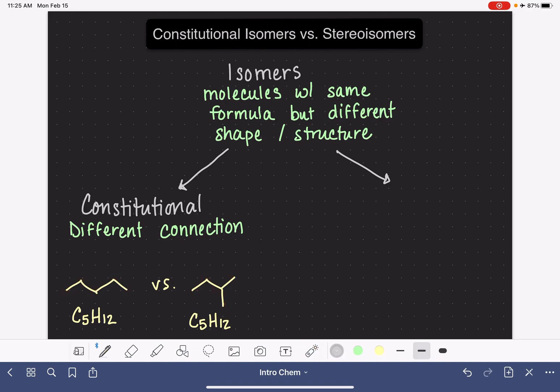A second type of isomer is known as a stereoisomer. Stereoisomers have the same connection, but they have something different about their shape. The atoms are going to be connected in the same order, but they have a different shape.